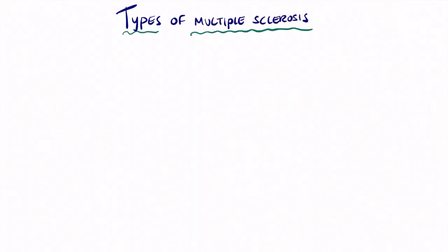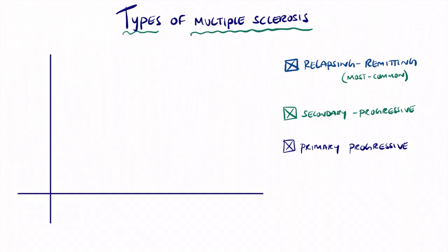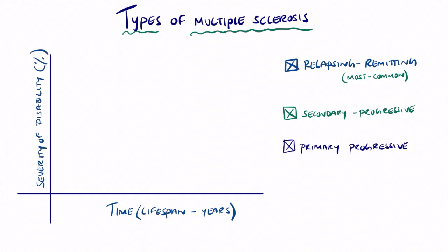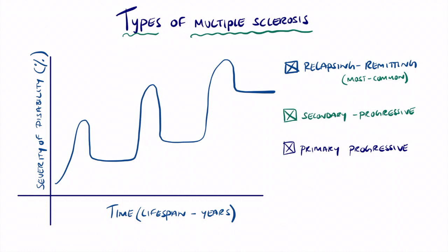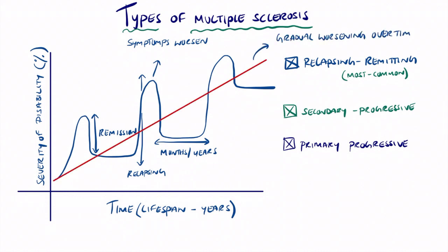There are four types of multiple sclerosis. The first and most common is relapsing-remitting MS. If we draw a graph with time (lifespan) on the x-axis and severity of disability on the y-axis, in relapsing-remitting MS there is an overall gradual increase in severity with periods of remission and relapse — symptoms worsen then improve then return. There is a slow overall worsening over time, and this affects around 80% of patients globally.